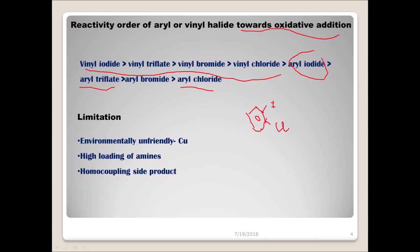There are certain limitations associated with Sonogashira reaction. First, we are using metals, which is not environmentally friendly. Second, we use high equivalents of triethylamine as base, which is again not preferred. Third, there's something called homo coupling — two alkynes can react together instead of with the desired partner — which is a major drawback of this reaction.